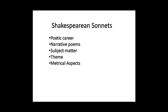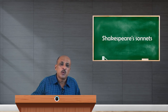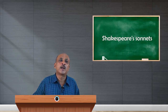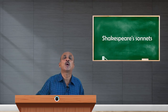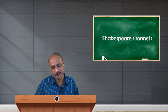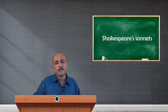Throughout his sonnets, Shakespeare followed one metrical form that differs from Petrarch. Shakespeare followed the rhyme scheme A-B-A-B, C-D-C-D, E-F-E-F, G-G — three stanzas and a couplet. This is the common format in terms of the rhyming pattern of Shakespeare.